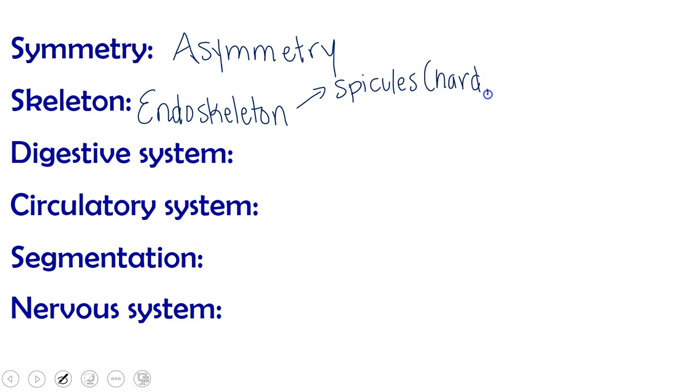Alright so now let's think about our sponge with these six characteristics, these are the six characteristics we're going to use to classify all of our invertebrates. So our sponges have asymmetry, they can't be cut in any way to make symmetrical halves. For their skeleton they have an endoskeleton with flesh on the outside of it and the endoskeleton can either be made of spicules which are kind of hard and brittle, very similar in construction actually to glass, or spongen which is flexible and spongy.